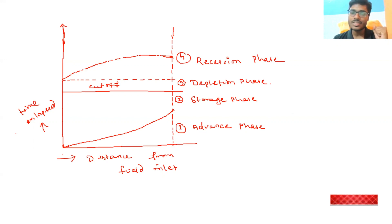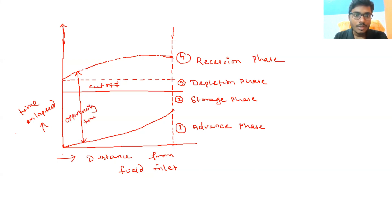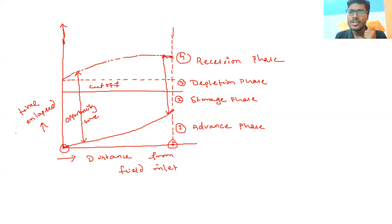The time gap between the advance phase and the recession phase is known as the infiltration opportunity time. If we notice on the graph, the opportunity time at the end of the field is shorter compared to the starting point of the field. This means more water will infiltrate at the starting point of the field than at the endpoint, which is why more percolation occurs at the starting point.